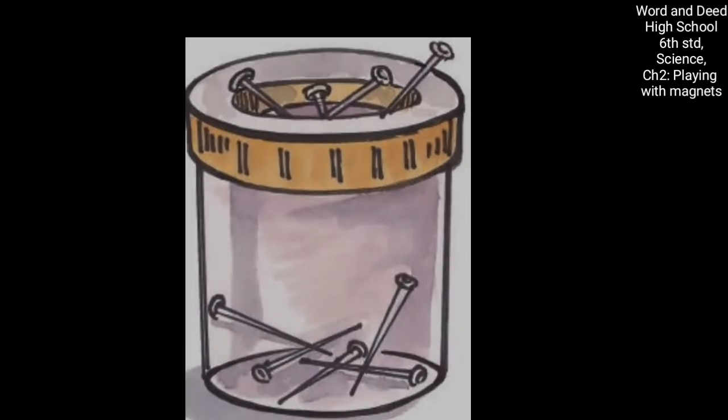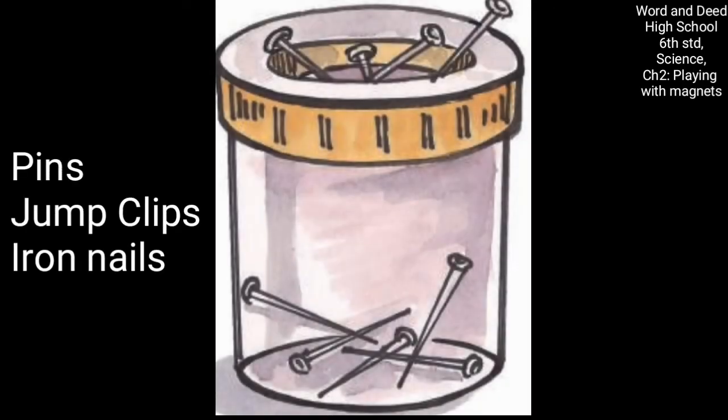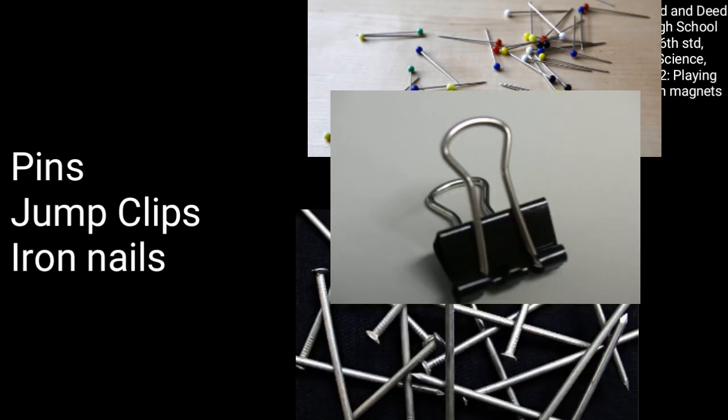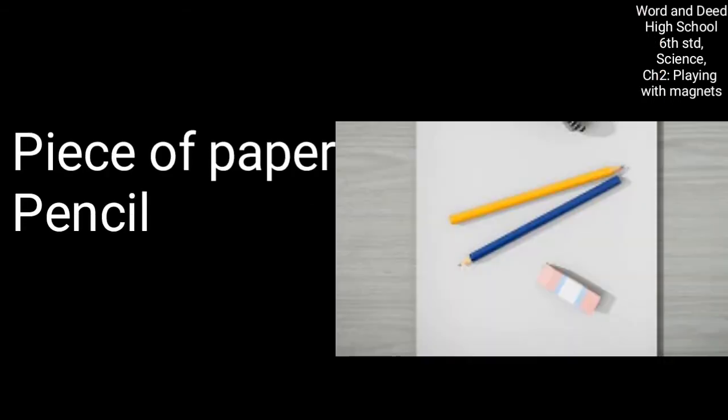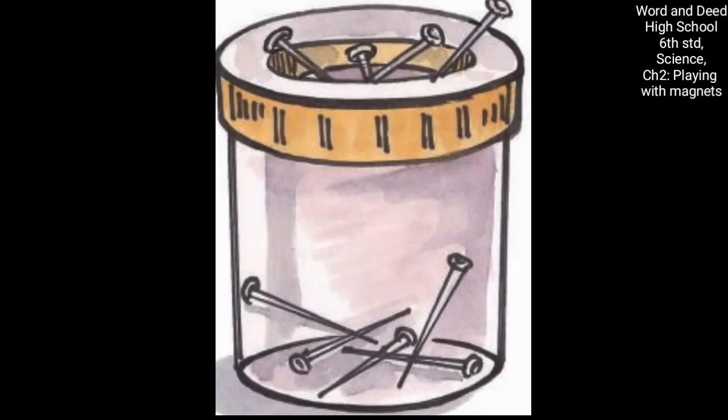Before doing this activity, you have to collect some things like pins, jump clips, iron nails, and etc. And other things like a piece of paper, a pencil, and an eraser. You have to collect these things. And then what you have to do, you have to try to bring these things close to the pin holder cap and you observe it. What would you understand?